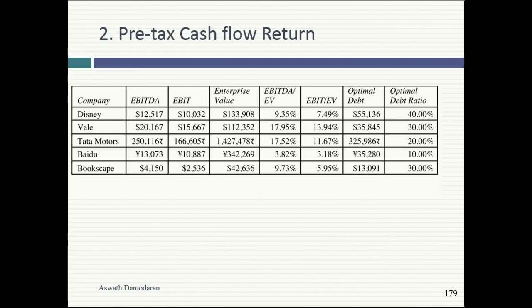The second factor driving the optimal is how much cash flow you generate as a percentage of your value. Facebook last year had cash flows of about $5 billion on a market cap of $200 billion — that's 2.5%. Exxon Mobil had cash flows of about $30 billion on a market cap of $250 billion — 12%. The more cash flows you generate as a percentage of value, the more you can afford to borrow. LBO participants use an EBITDA multiple relative to enterprise value just to see how much cash is being thrown off to service debt. You can have a very valuable firm that can't borrow, and a less valuable firm that can borrow a lot — it's driven by where you are in the life cycle.